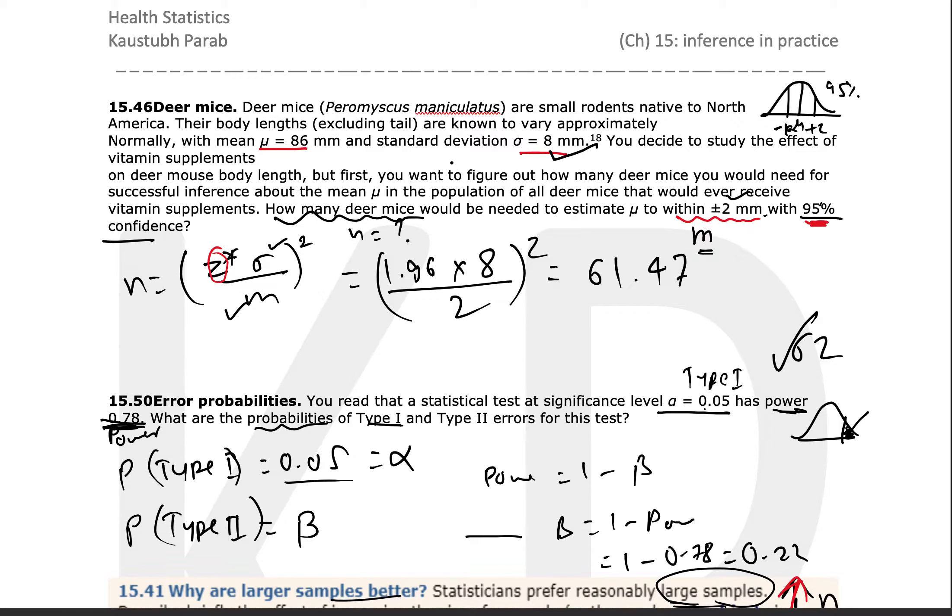You can see that mu is given, some values are given, sigma is given, and assumptions are made. Then you have margin of error given to you, and they've asked you to calculate the number of deer mice for a 95% confidence interval when the margin of error is given to you.